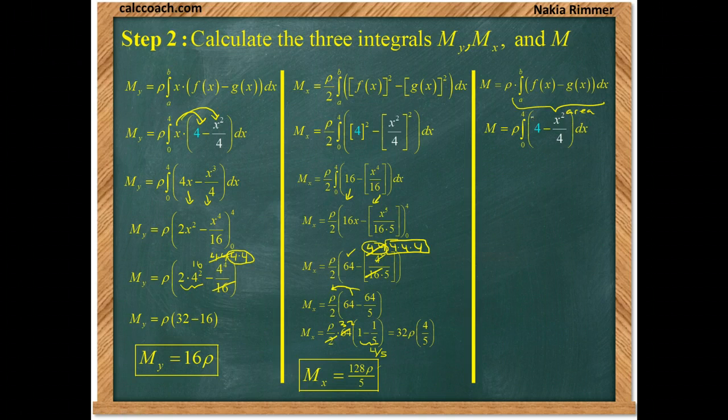So, what we're going to have is f gets replaced by 4. g of x gets replaced by x squared over 4.